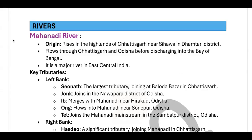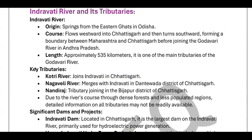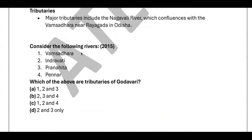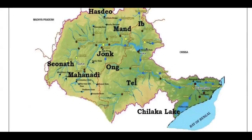Welcome to the mapping series. Today's topic is the Mahanadi river. Before starting, let's see how questions are asked. For example, a 2015 question asked: 'Consider the following rivers — Vamsadhara, Indravati, Pranahita, Pannur — which are tributaries of the Godavari?' They ask about rivers, tributaries, important national parks along these rivers, and government projects on them. We will discuss these rivers one after another.